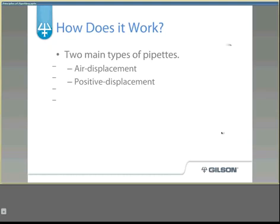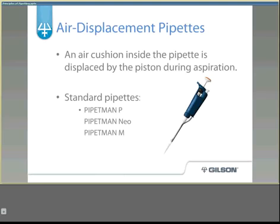There are two main types of pipettes: air displacement and positive displacement, and they function very differently. Air displacement pipettes have an air cushion inside the pipette that is displaced by the piston during aspiration, meaning the volume of air displaced is equivalent to the volume of liquid aspirated. Examples include the Pipetman P, Pipetman Neo, and the Pipetman M.